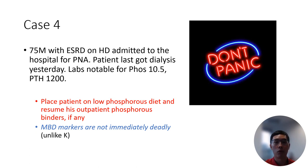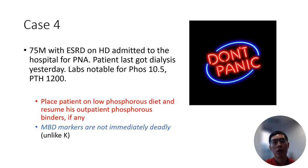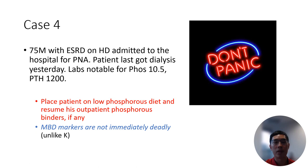We tend to order a lot of labs for dialysis patients, some that you may not necessarily be aware of. As part of management of chronic kidney disease, we also deal with metabolic bone disease, which involves assessing a patient's calcium, phosphorus, vitamin D, and parathyroid hormone levels. Metabolic bone disease occurs due to the inability of the kidneys to produce active vitamin D, and can result in a higher risk of bone fractures and cardiovascular disease over time. Studies have shown that we want to correct these parameters to more normal levels over time, though these are usually not issues that need to be dealt with emergently in the hospital. Unlike hyperkalemia or hypercalcemia, hyperphosphatemia is usually a byproduct of diet and medication non-adherence and will not be immediately life-threatening.